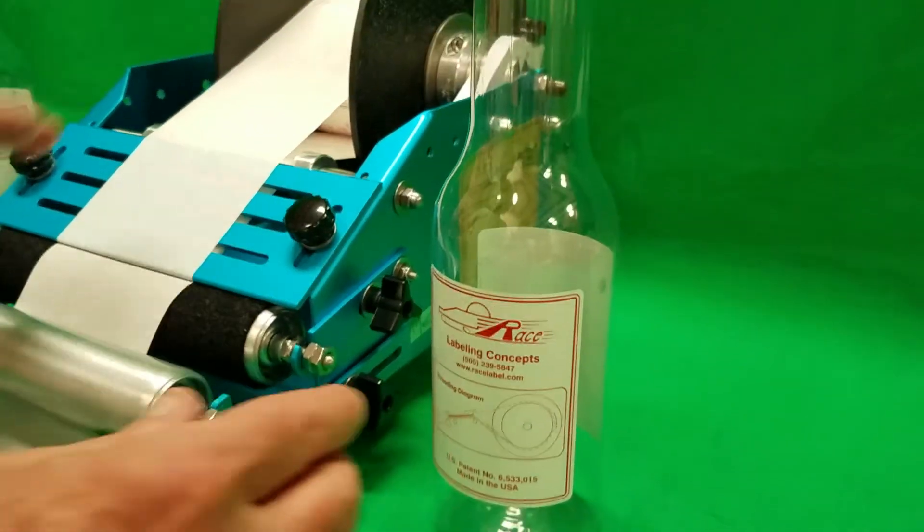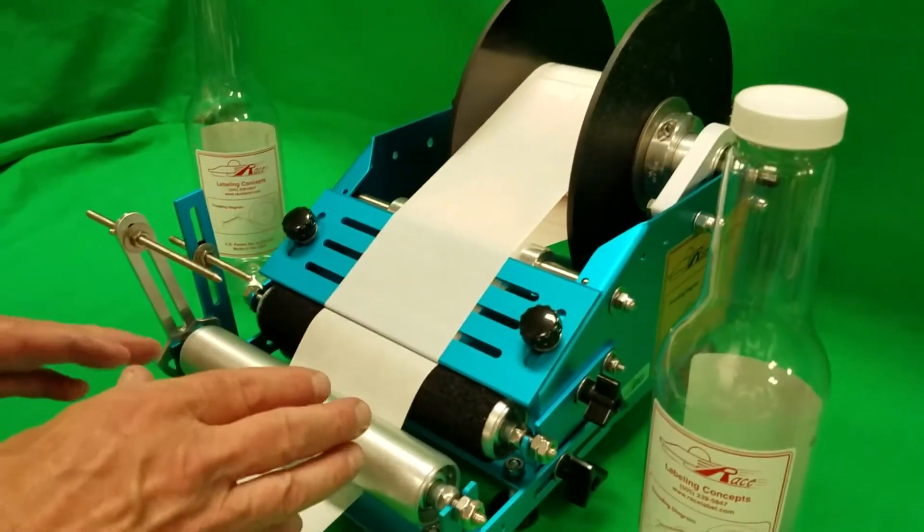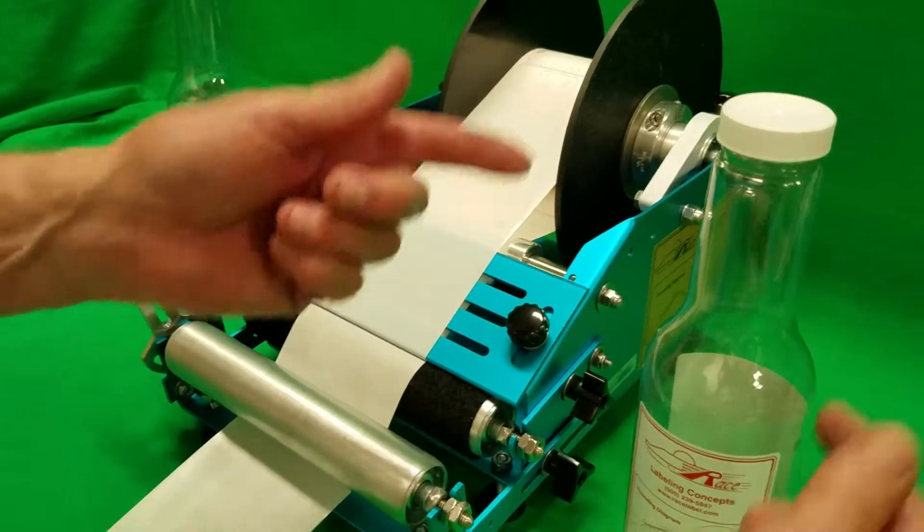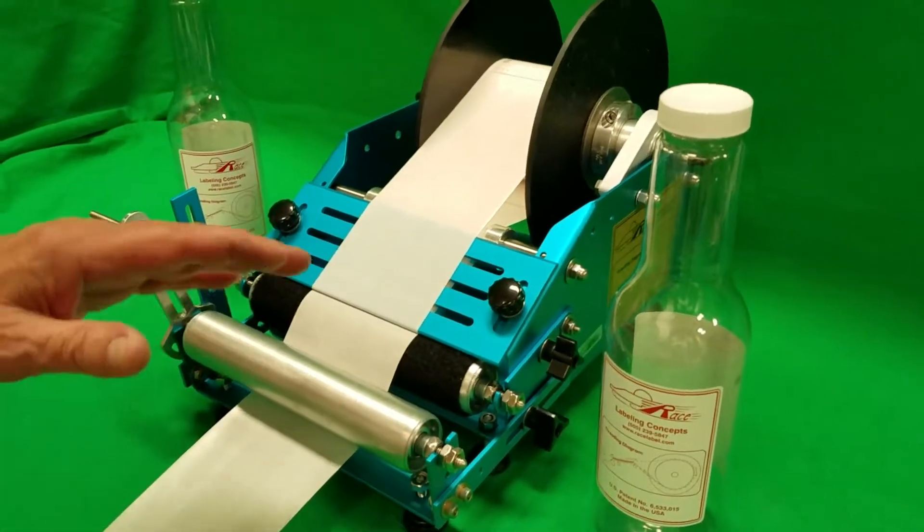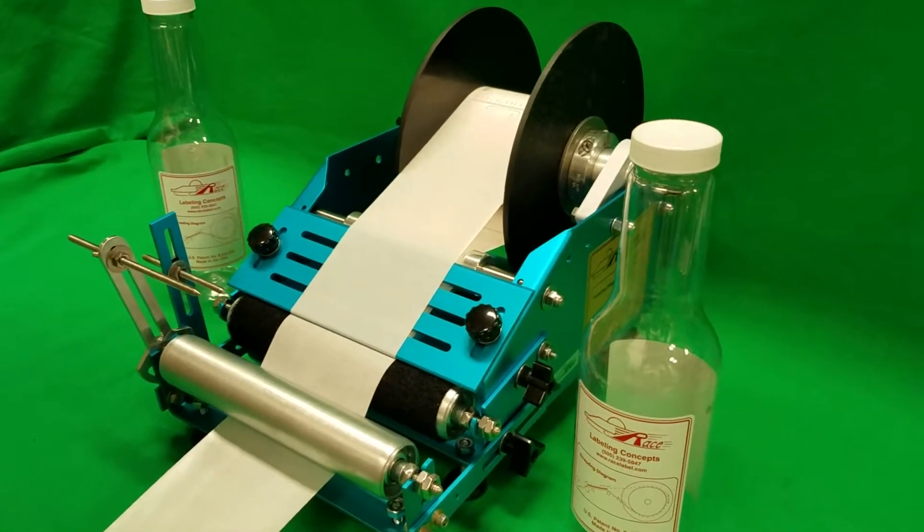And you're able to use this same thing to keep off the seams on the bottle. It has two seams on it. You don't want to label over this. So with these indicators, you can position it so that you don't have to label over the seams.